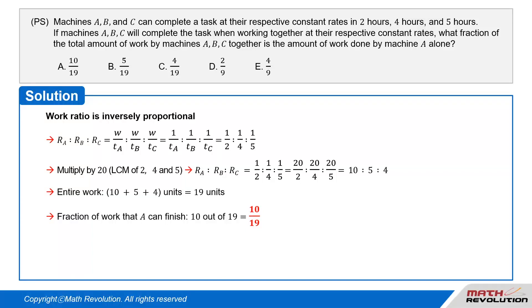This means if the entire work is 10 + 5 + 4 units, or 19 units, machine A can finish 10 units out of the total 19 units. Therefore, the fraction of work that A can finish is 10 out of 19, or 10/19.